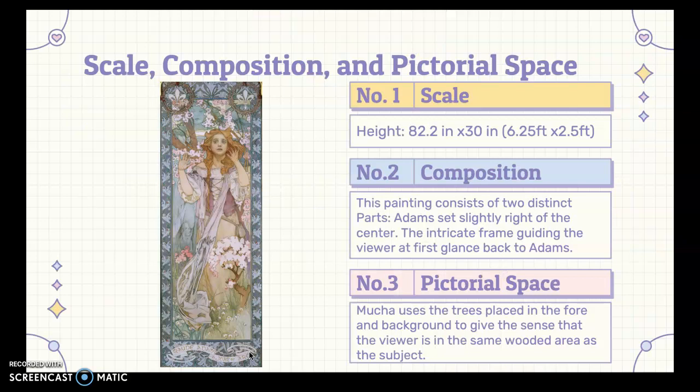The scale, composition, and pictorial space: it's actually a rather large piece — 6.25 feet tall and 2.5 feet wide. The painting mostly consists of two obvious parts: Maud Adams set slightly right of center, and the intricate frame that guides your eye back to Adams. I would also consider the apparition behind her as a secondary part of this composition. Mucha uses trees placed in the foreground and background to give the sense that the viewer is in the same wooded area looking through at Maud Adams as Joan of Arc.